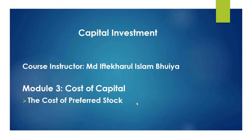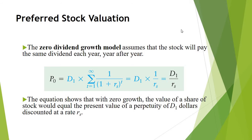Preferred stocks usually provide a fixed dividend every year. Now let's look at preferred stock valuation, because the same preferred stock valuation models will be used to find out the cost of preferred stock. Since preferred stocks provide a fixed dividend per year, to find out the value of the preferred stock you need to use the zero dividend growth model of stock valuation.